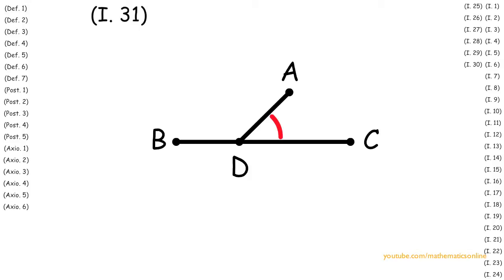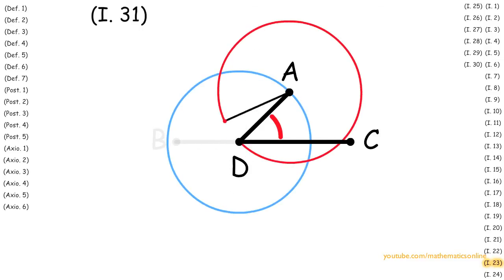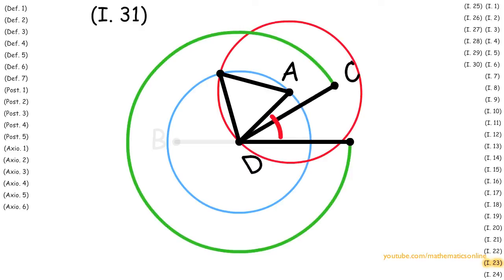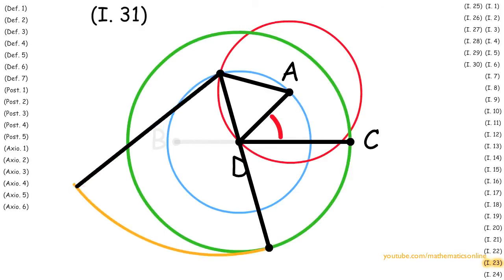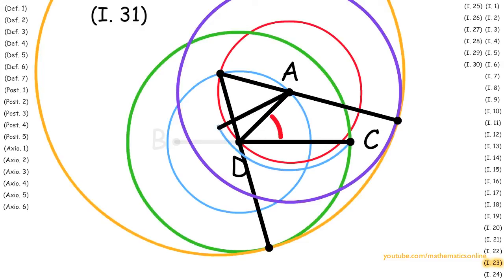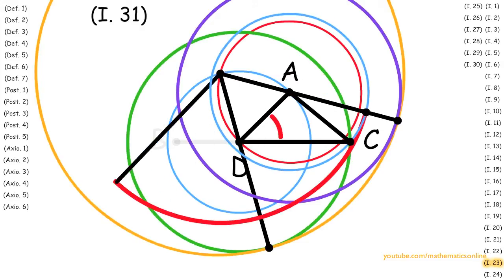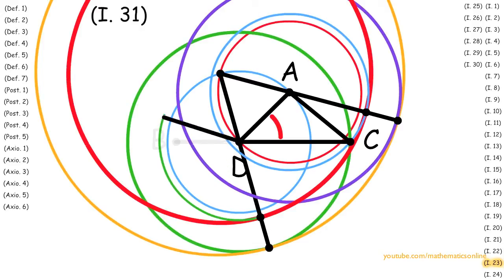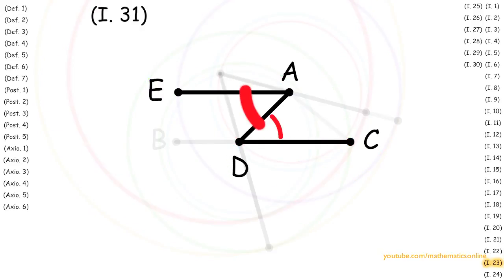Now with the straight line AD and angle ADC, we apply Proposition 23 to construct a duplicate angle on line AD. So by Proposition 23 we have angle DAE is congruent to angle ADC.